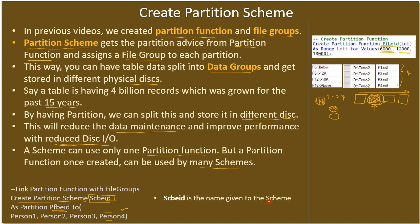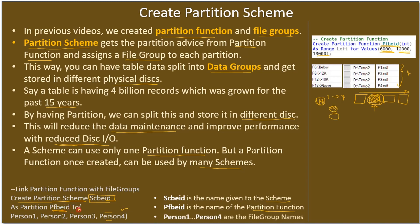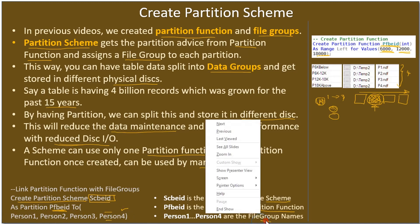hcbid is the name given to the scheme, and hcbeid is the name given to the partition function. We already created that partition function and are referring to it here. person1 through person4 are the file group names.